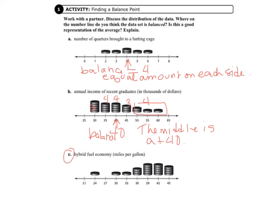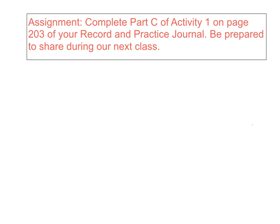Letter C, you're going to need to do the same thing that we did in letter B on your own, so that's your assignment for this lesson. Your assignment for this lesson is to complete Part C of Activity 1 on page 203 of your record and practice journal. Be prepared to share during our next class.